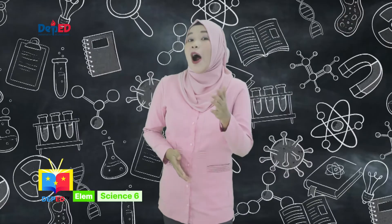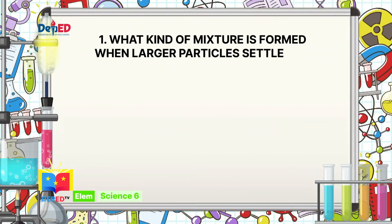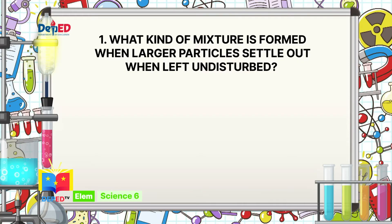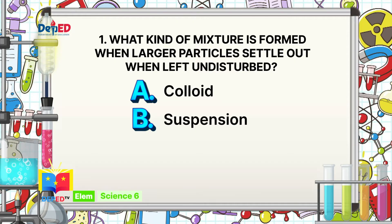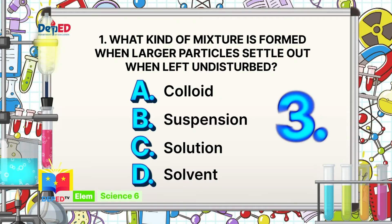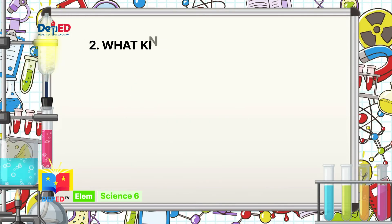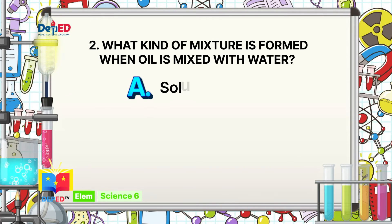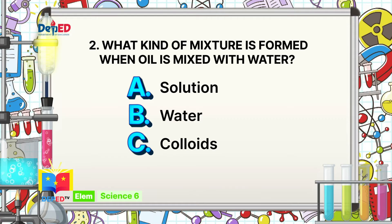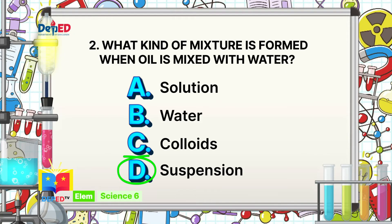Science-minded learners, are you ready for our Assessment? Use the letter of the best answer. Write your answers on your paper. Number 1: What kind of mixture is formed when larger particles settle out when left undisturbed? A. Colloid, B. Suspension, C. Solution, or D. Solvent. The correct answer is Suspension.